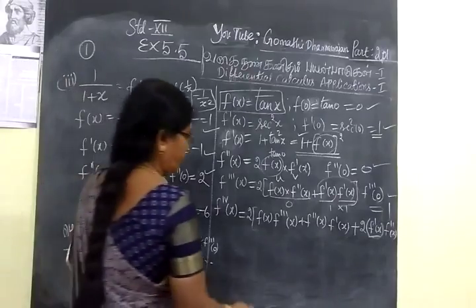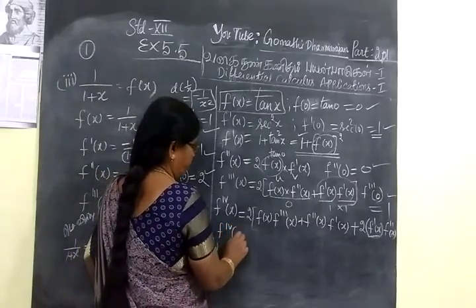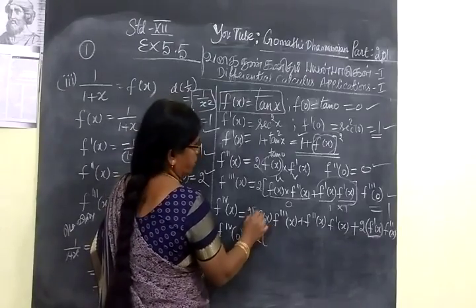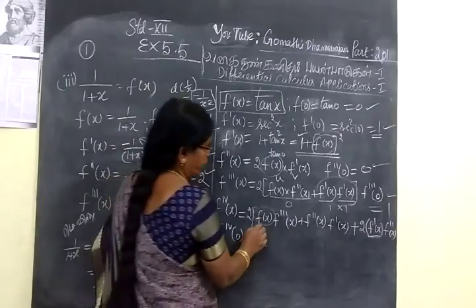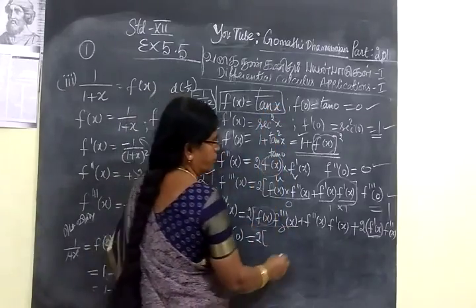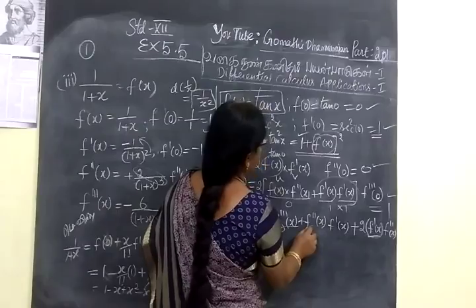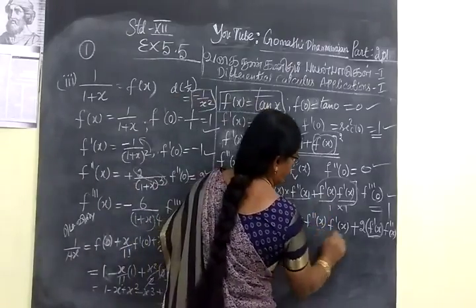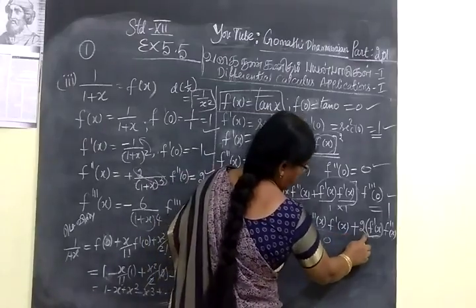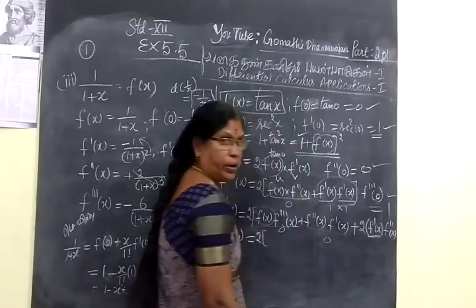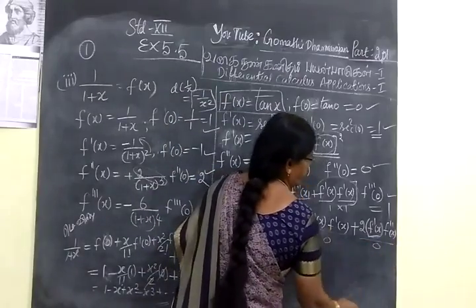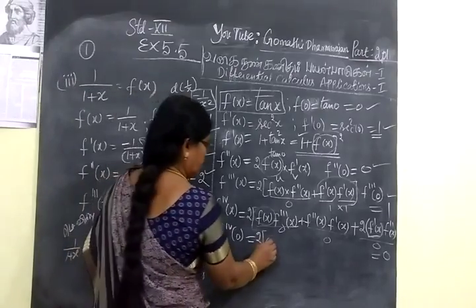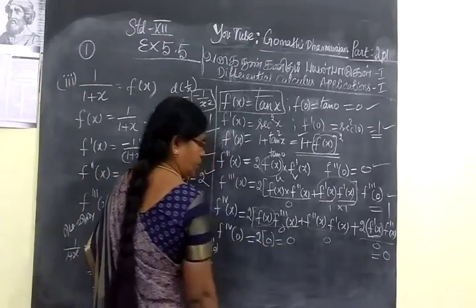So now you have to find f quadruple dash of 0. The f of x is 0. This is the main function. f of x is completely 0. This is tan 0, 0. This is f of x and f of x. This is f of x. This is f double dash of x. This is the function. So 2 bracket 0. So this is 0.